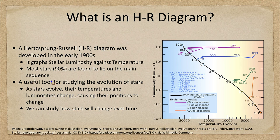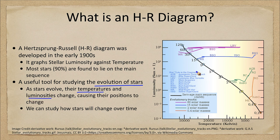This is a very useful tool for studying the evolution of stars — how stars change over their lives. As they evolve, their temperatures and luminosities change, which will cause their location on the HR diagram to change. We can track that out by making models of stars and studying how they would appear to change.